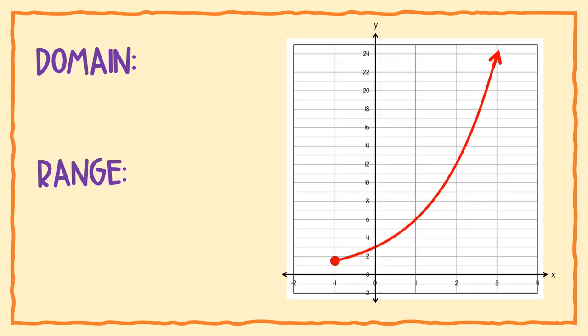Let's do another example where one side has an arrow and one side has an endpoint — that changes how we write domain and range. Starting with domain on the x axis, smallest to biggest means left to right. It starts at negative 1, and the arrow on the other end keeps going, so it goes all the way to positive infinity.